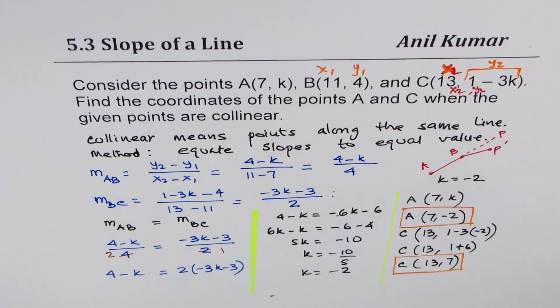So the concept is, equate the slopes between any two points as same. Then you get the value of K. So that actually gives you an equation to solve, which can help you get the value of K. I hope the concept is absolutely clear.